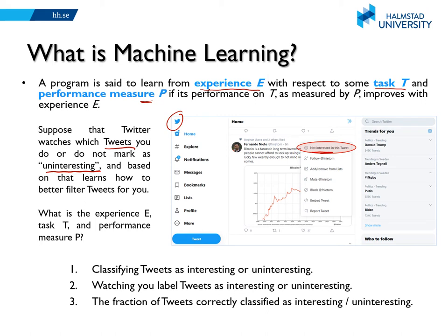So in this case, what is the task T? Classifying tweets as interesting or uninteresting — that's what we want to do. Watching you label tweets as interesting or not is the experience — it involves data. The fraction of tweets correctly classified is the performance measure. If you are getting better and better at performing this task by observing more and more data, then you say that your program is learning.